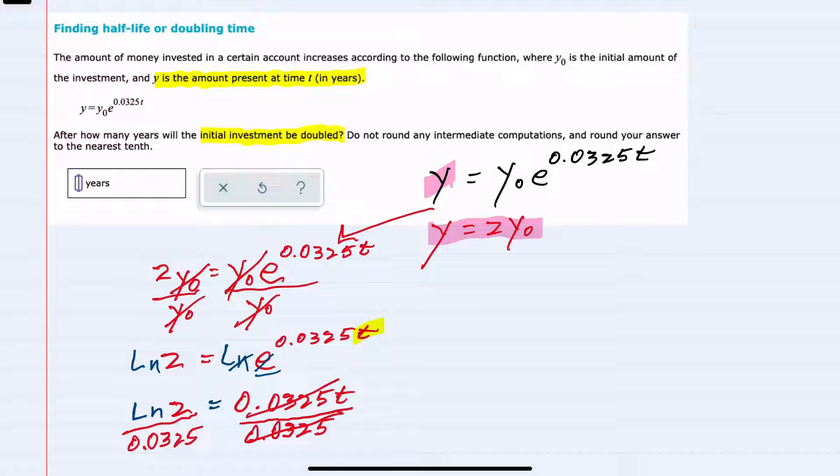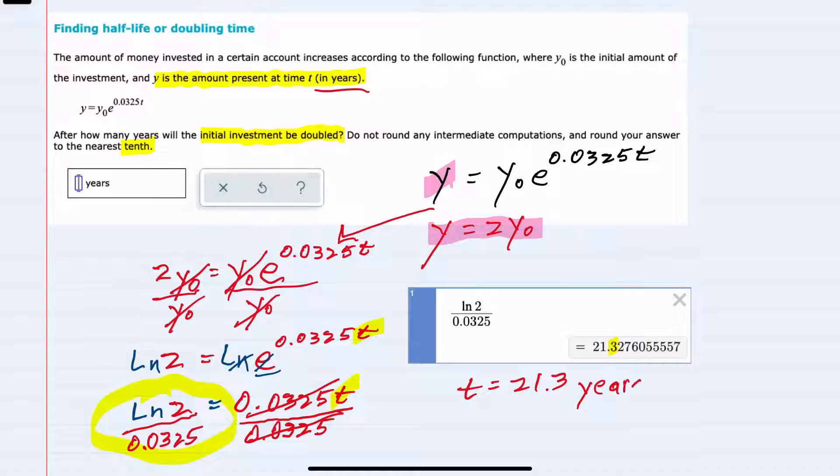Canceling on the right-hand side, we now have t by itself. We can plug into a graphing calculator like Desmos to avoid intermediate computations. Rounding to the nearest tenth, our time equals 21.3, and since our rate was given in years, this time will also be in years.